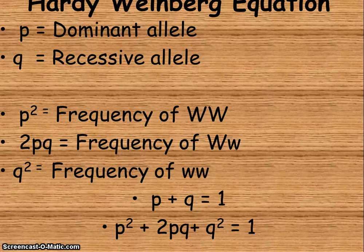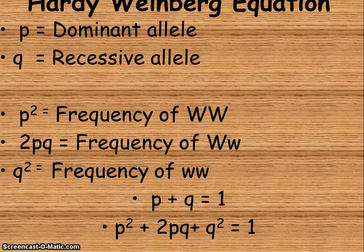We're going to practice this in class, so don't stress out about it. Lowercase p represents the dominant allele. Lowercase q represents the recessive allele. p squared is the frequency of WW. 2pq is the frequency of the heterozygote Ww. And q squared is the frequency of ww.